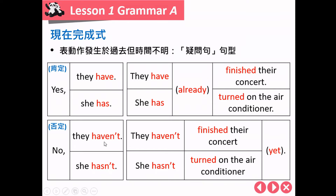No, they haven't. They haven't finished their concert yet. No, she hasn't. She hasn't turned on the air conditioner. 要稍微注意一下小细节：在疑问句之中我们会放入 yet，否定句我们也会放入 yet，肯定句之中我们会放入 already，但是这些都可以被省略。